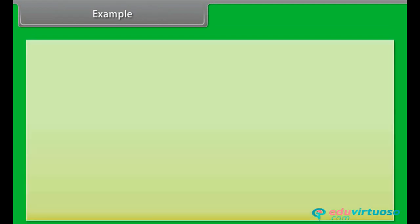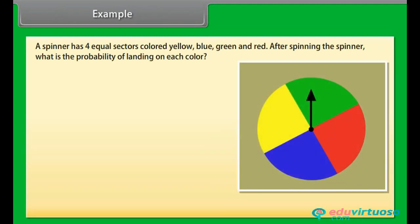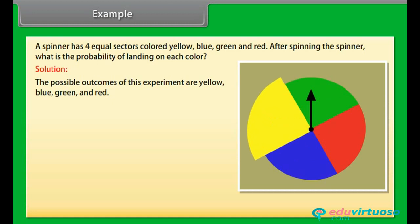Example: A spinner has four equal sectors colored yellow, blue, green, and red. After spinning the spinner, what is the probability of landing on each color? Solution: The possible outcomes of this experiment are yellow, blue, green, and red.